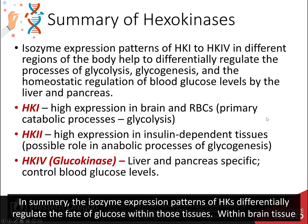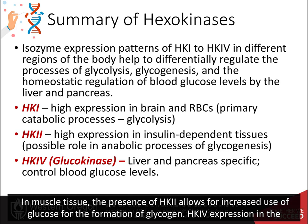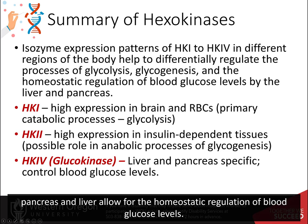In summary, the isozyme expression patterns of hexokinases differentially regulate the fate of glucose within those tissues. Within brain tissue and red blood cells, where only HK1 is present, glucose is predominantly used in the glycolytic pathway for energy production. In muscle tissue, the presence of HK2 allows for increased use of glucose for the formation of glycogen. HK4 expression in the pancreas and the liver allow for homeostatic regulation of blood glucose levels.